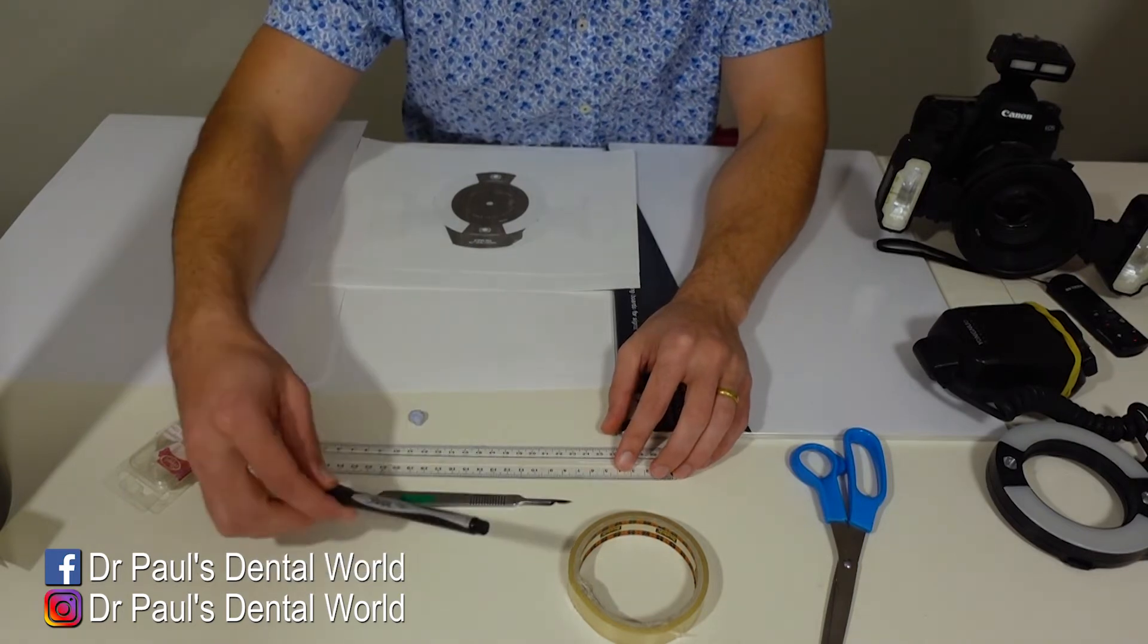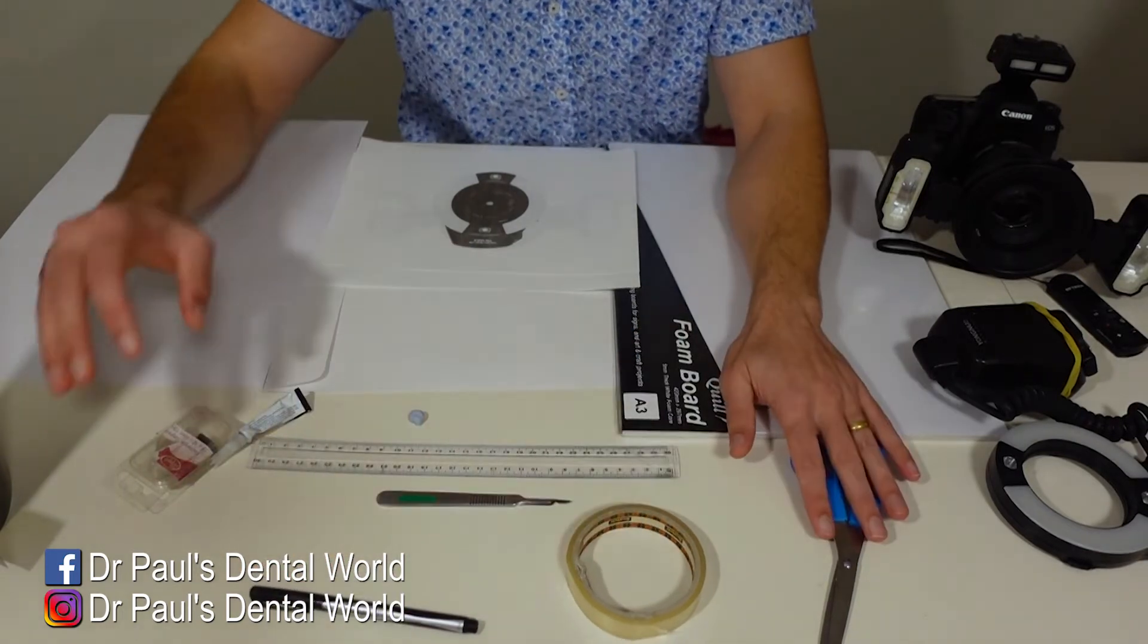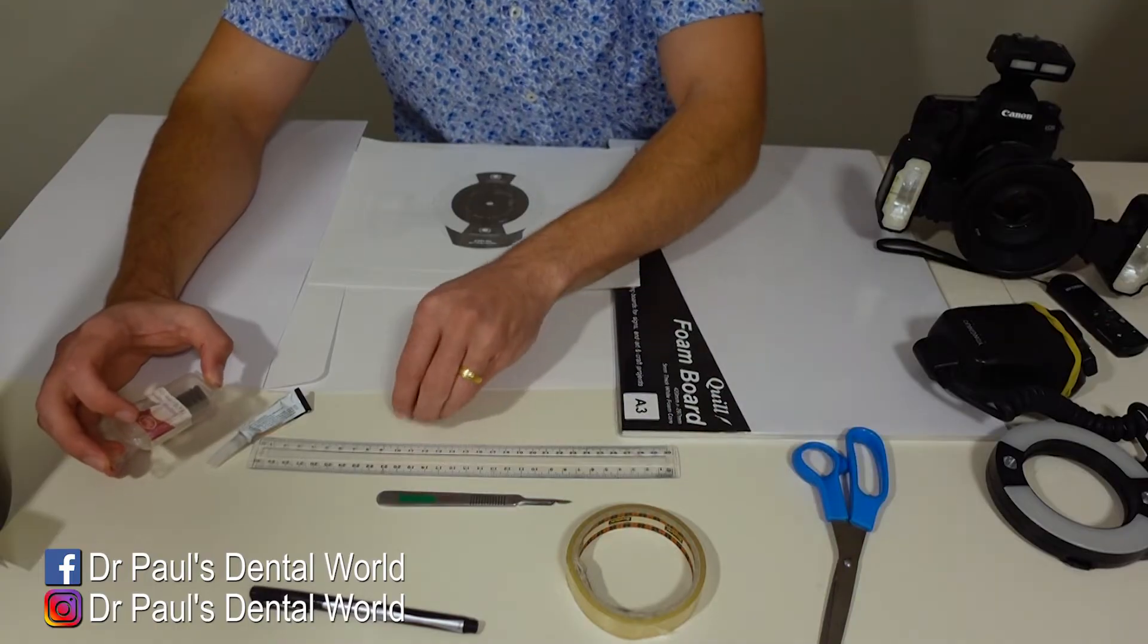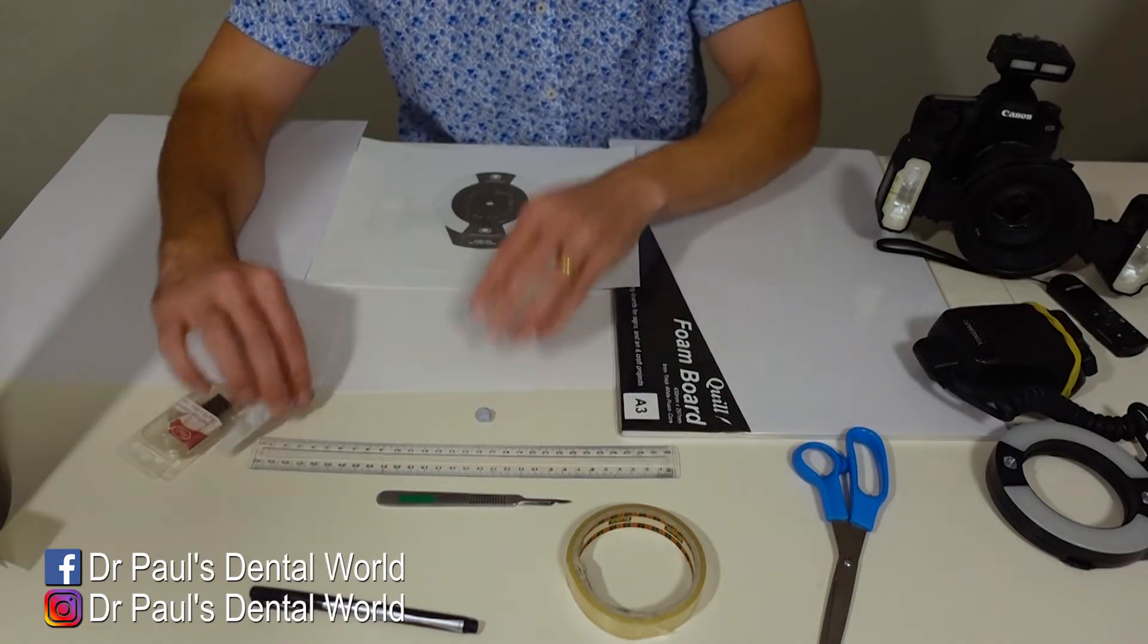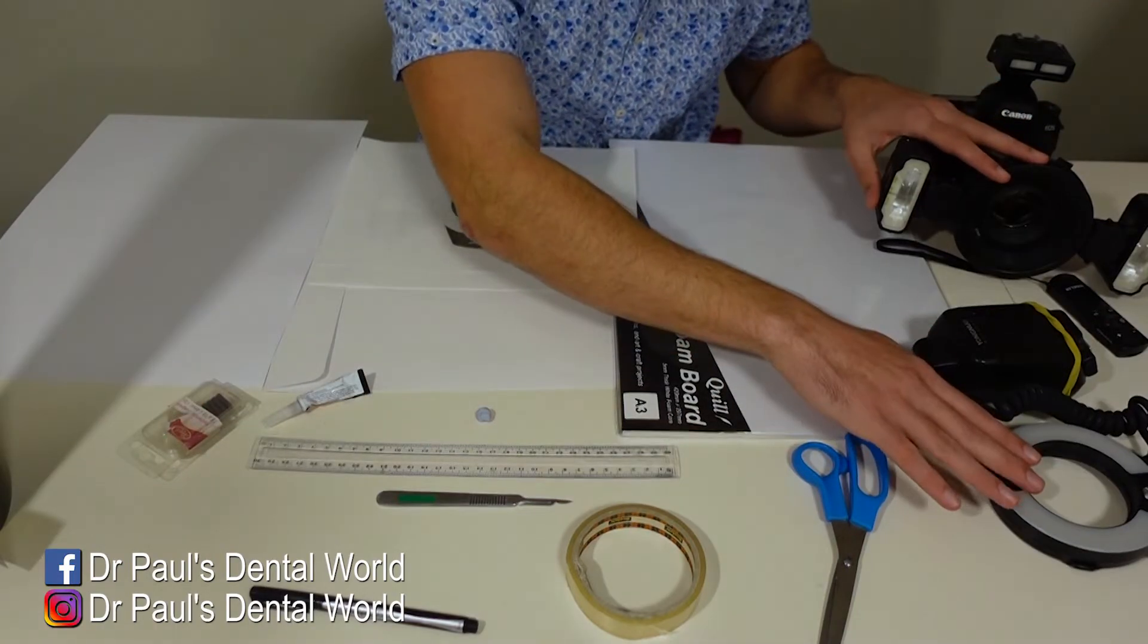Then we've got a ruler. We've also got a permanent marker, sticky tape, scissors. We've got some magnets. You'll see how we use those. Blu-Tac and then we've got some superglue as well. Then the flashes of course.